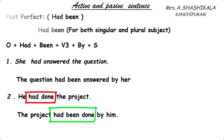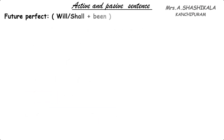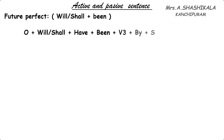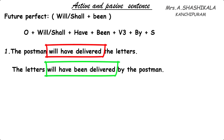Next is the future perfect. In future perfect we are going to use 'will' or 'shall' plus V3 in active. In passive, we use 'will' or 'shall' plus 'have been'. Example: 'The postman will have delivered the letters.' 'Will have delivered' changes to 'will have been delivered'. The answer is: 'The letters will have been delivered by the postman.'